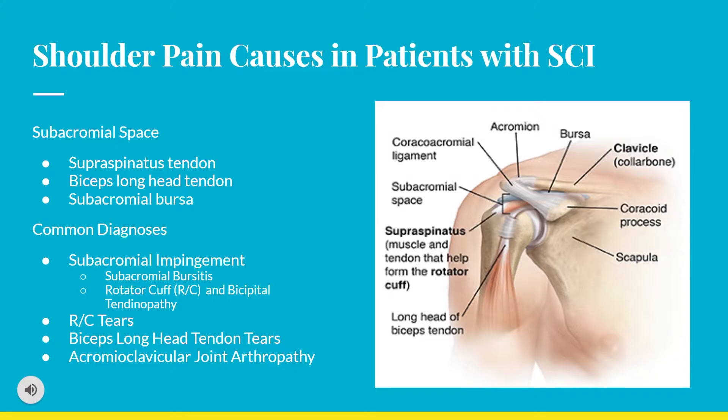The most common is subacromial impingement, which can lead to a whole host of problems such as subacromial bursitis, rotator cuff tendinopathy via the supraspinatus tendon, and/or bicipital tendinopathy. These can progress further into a rotator cuff or biceps long head tear, and/or an acromioclavicular joint arthropathy, which is the inflammation of the AC joint itself.